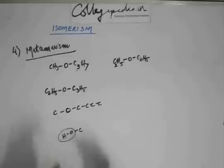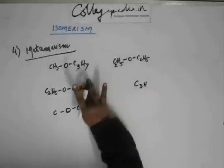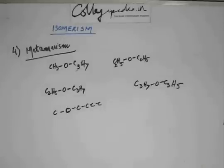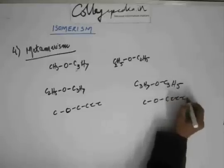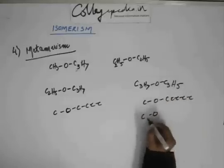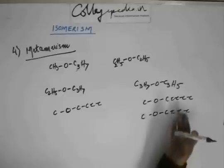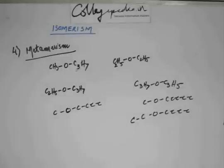Now try for C3H7–O–C3H7. You have six carbons altogether. You can have one on one side and five on the other; then two on one side and four on the other; then three and three. Four and two would be the same as two and four, and five and one is the same as one and five. So these three are the possible metamers — no more. These are all metamers: simple and easy to understand.